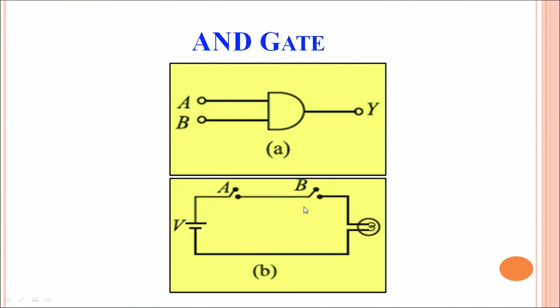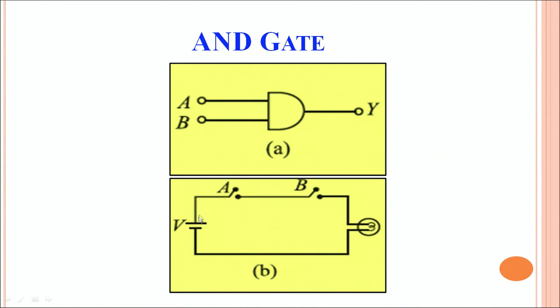When both A and B are off, the input is considered 0,0, and the bulb does not glow — output is 0. When one of them is closed, either A becomes 1 or B becomes 1, but in both cases the bulb does not glow. Only when both A and B are closed does current flow through the circuit, the bulb glows, and the output is 1.